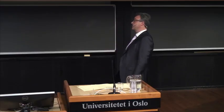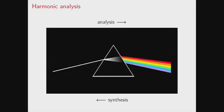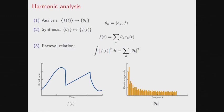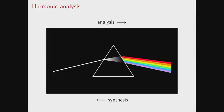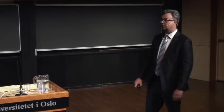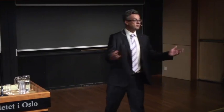In harmonic analysis there are three fundamental steps. First is analysis, where we compute these coefficients. Then synthesis, where we take the coefficients and assemble them together to create a signal. Then the Parseval relationship, which says that the energy of the signal is conserved. I understand this best through the cover of Dark Side of the Moon by Pink Floyd, where a prism splits a wave to reveal different colors — that's analysis — and synthesis goes the other way, reassembling colors to create the incoming signal with no loss of energy.